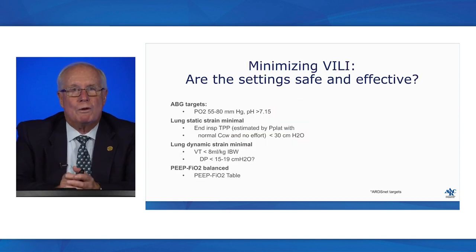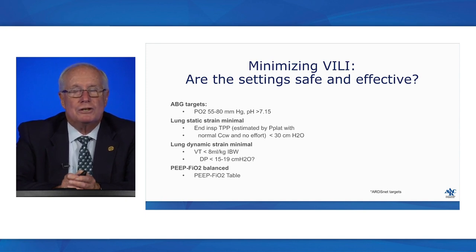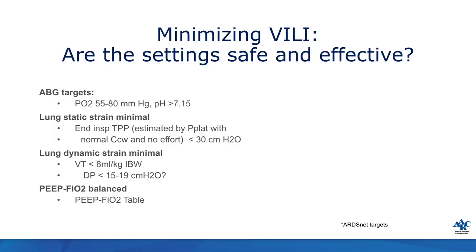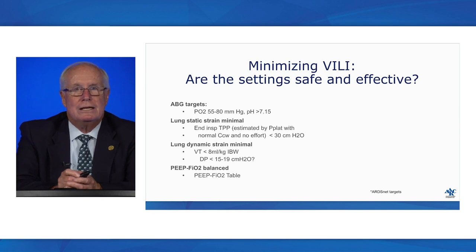Summarizing safe and effective ventilator settings: Is PO2 between 55 and 80? Is pH above 7.15? Is maximal strain kept low — plateau pressure less than 30, hopefully reflecting transpulmonary pressure less than 30? Is tidal volume less than 8 mL/kg? Is driving pressure at least below 15 (some might argue 19)? And are we on a proper PEEP/FiO2 table? These are the rules of the road in modern mechanical ventilator management.